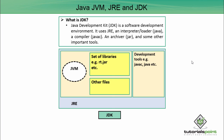JDK is the Java Development Kit and it is a software development environment. It uses JRE, an interpreter/loader called Java, a compiler called JavaC, an archiver called JAR, and other important tools. JDK is an implementation of any one of the following Java platforms released by Oracle Corporation: the Standard Edition Java platform, the Enterprise Edition Java platform, or the Micro Edition Java platform.